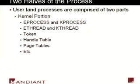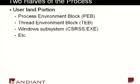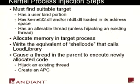Also within the kernel is the token of the process, handle tables, and the paging tables - how you do virtual to physical memory translation for this particular process. The userland portion of a process contains things like the process environment block, the thread environment block, and the Windows subsystem, which csrss.exe uses to communicate with the process - messages such as GUI messages and so forth. So if you want to inject into a process, first you have to find a suitable target.